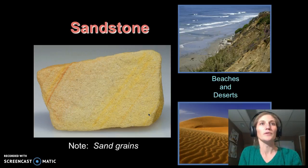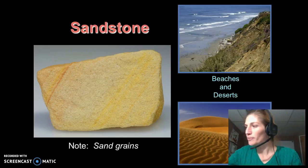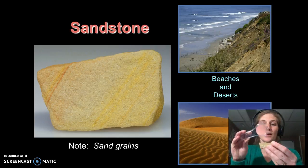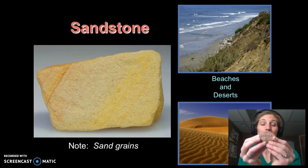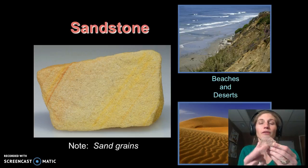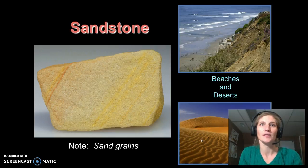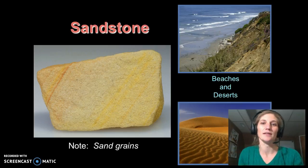Sandstones are particles we can still see with our eyes — less than two millimeters in size and greater than one-sixteenth of a millimeter. A good example would be sample 33 in your box. If you look closely with your hand lens, you'll see little rounded particles cemented together — this is a good example of a quartz sandstone. The particles are little grains of quartz that have been rounded. Sandstones tend to form on beaches and in desert environments, as wind picks up and weathers particles into sand-sized grains.